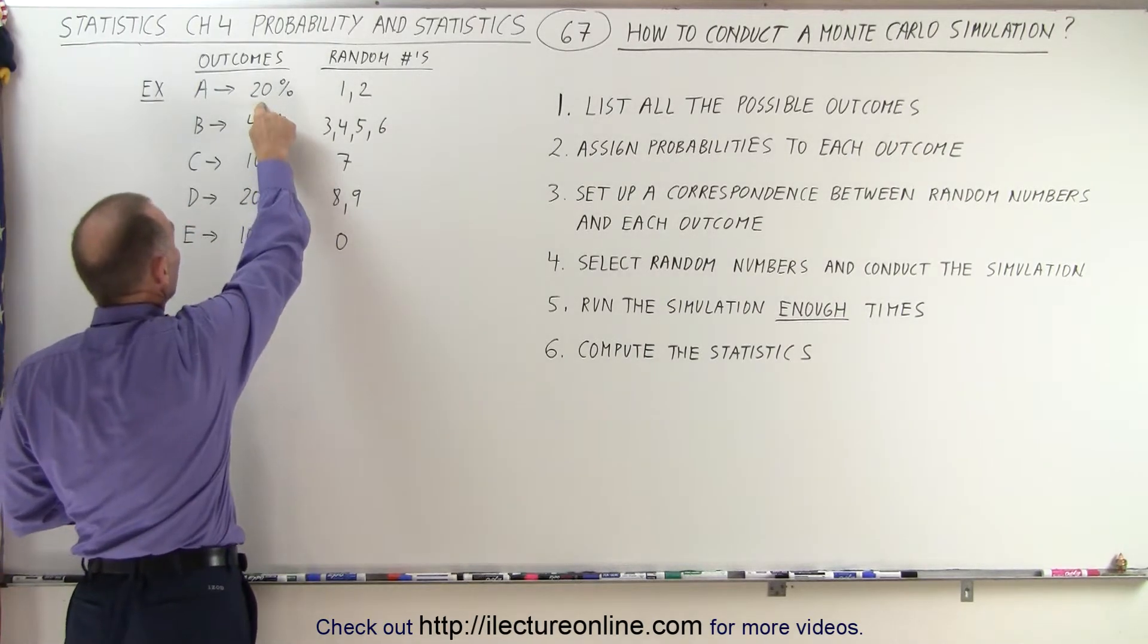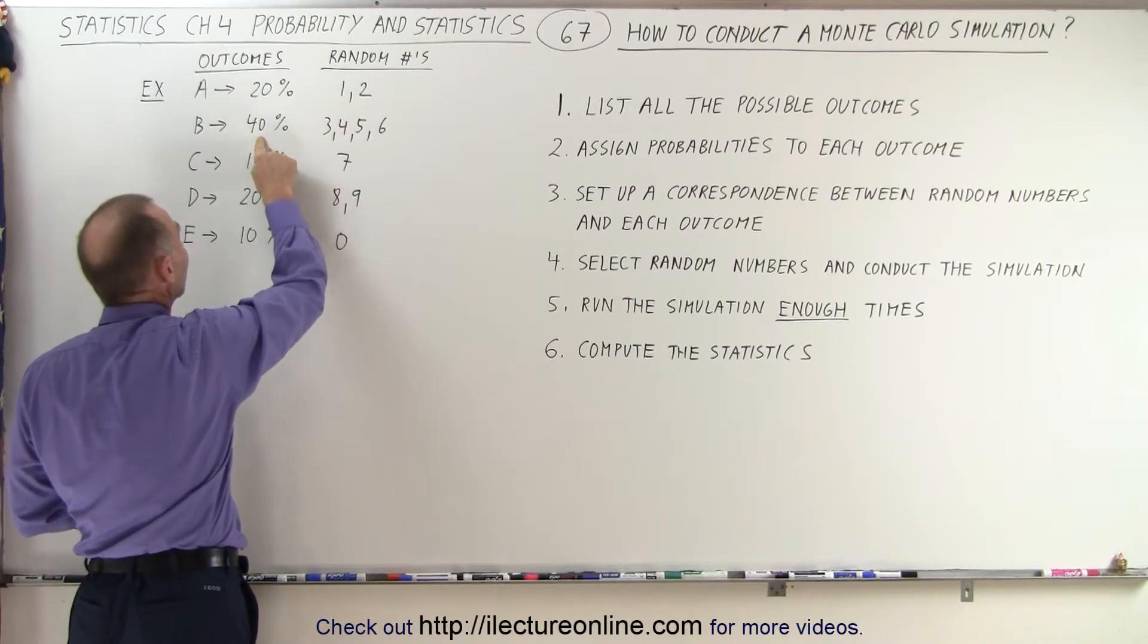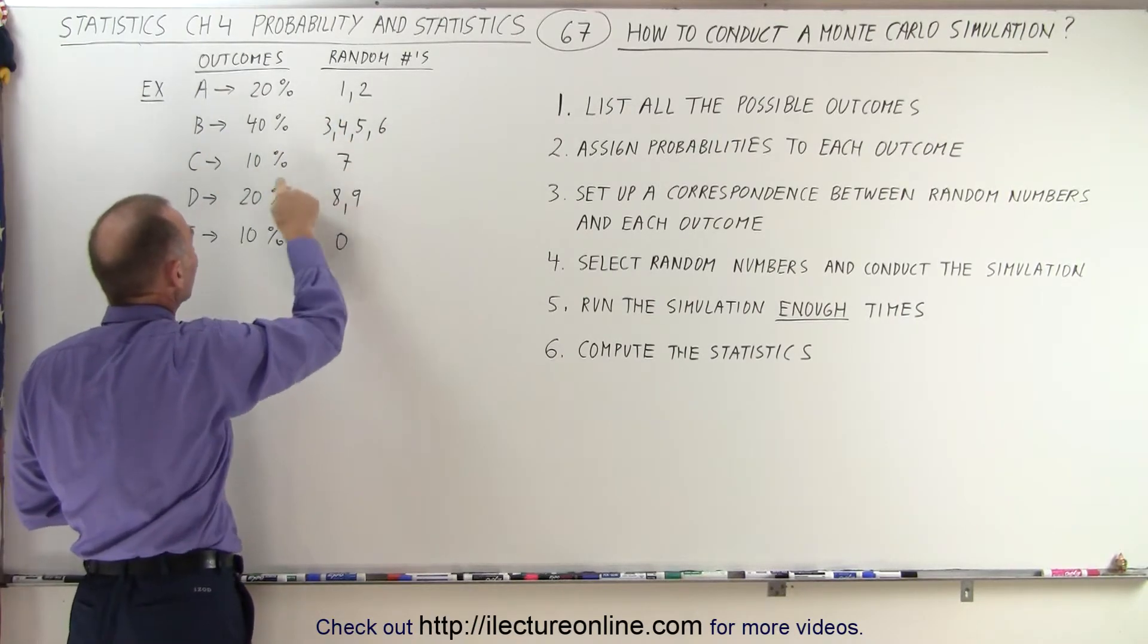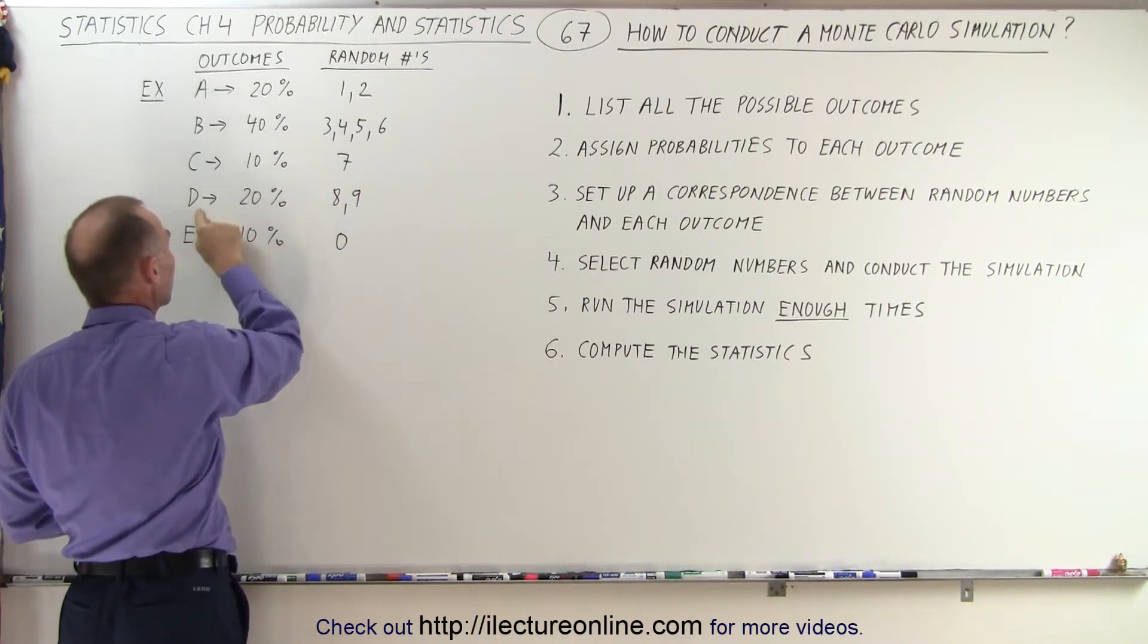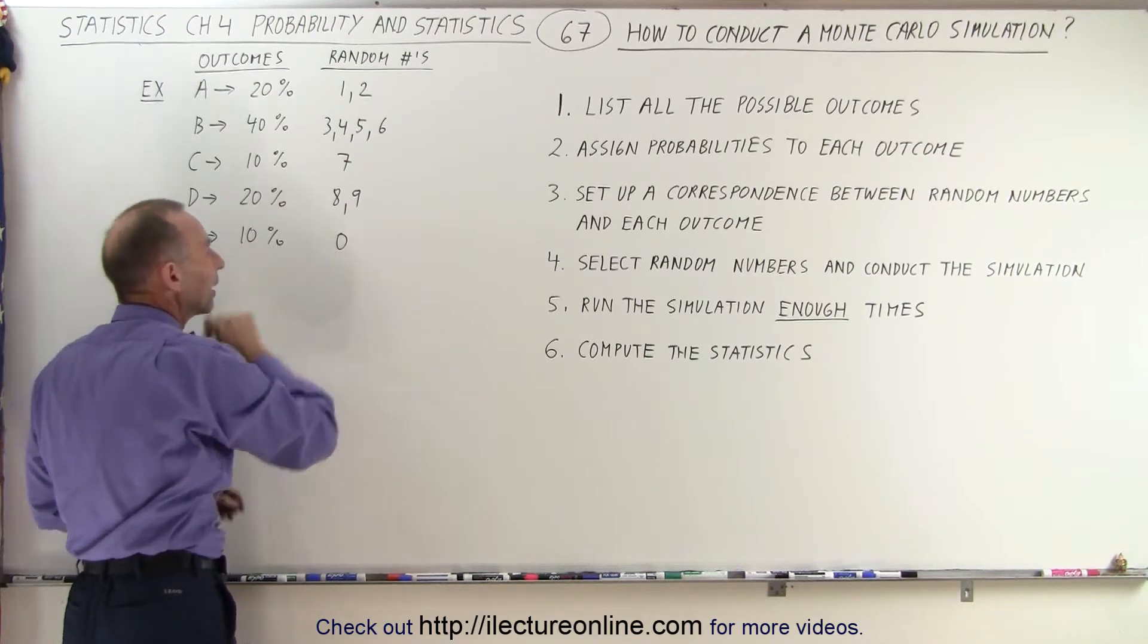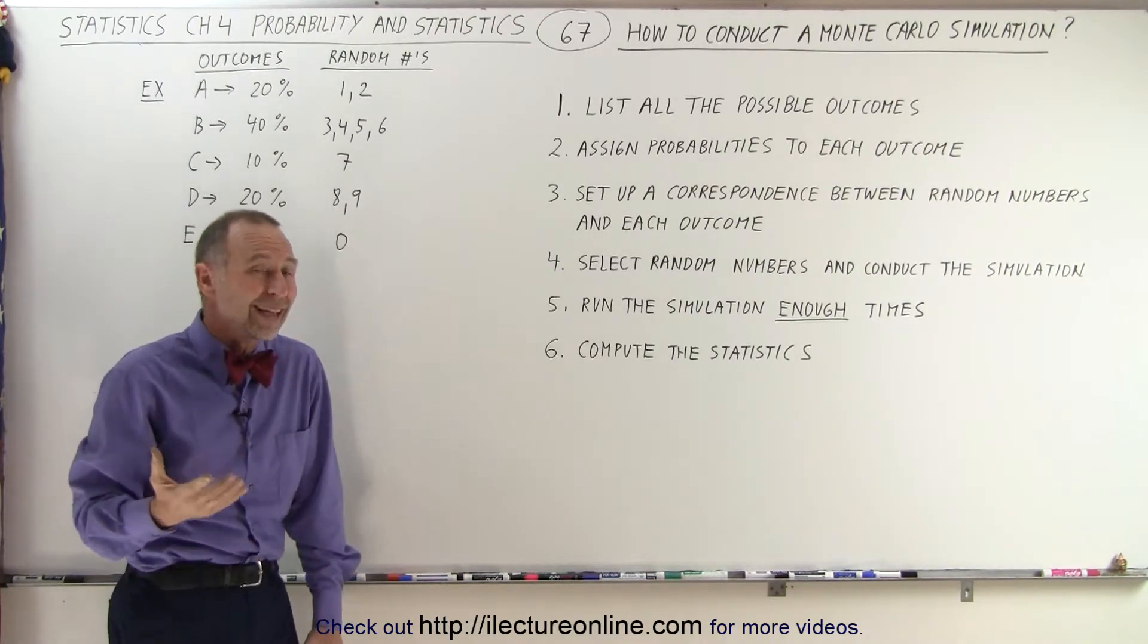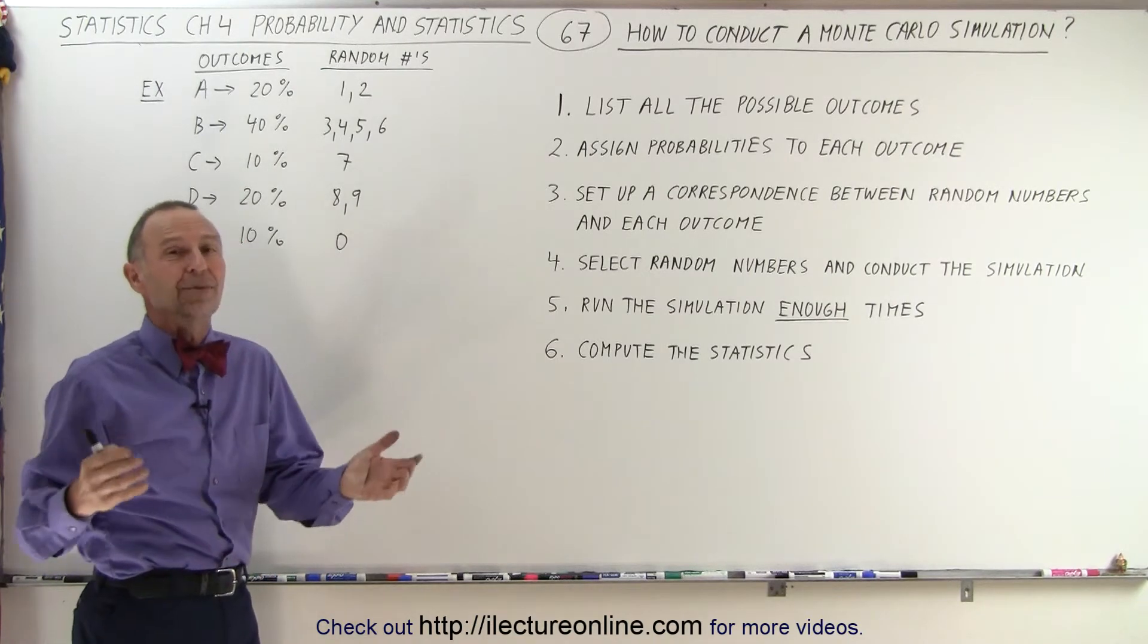Since there's a 20% probability that A will occur, we'll give it 2 numbers. 40% that B will occur, we'll give it 4 numbers. 10% that C will occur, we'll give it 1 number. 20% that D will occur, we'll give it 2 numbers. And 10% that E will occur, so we'll give it 1 number.